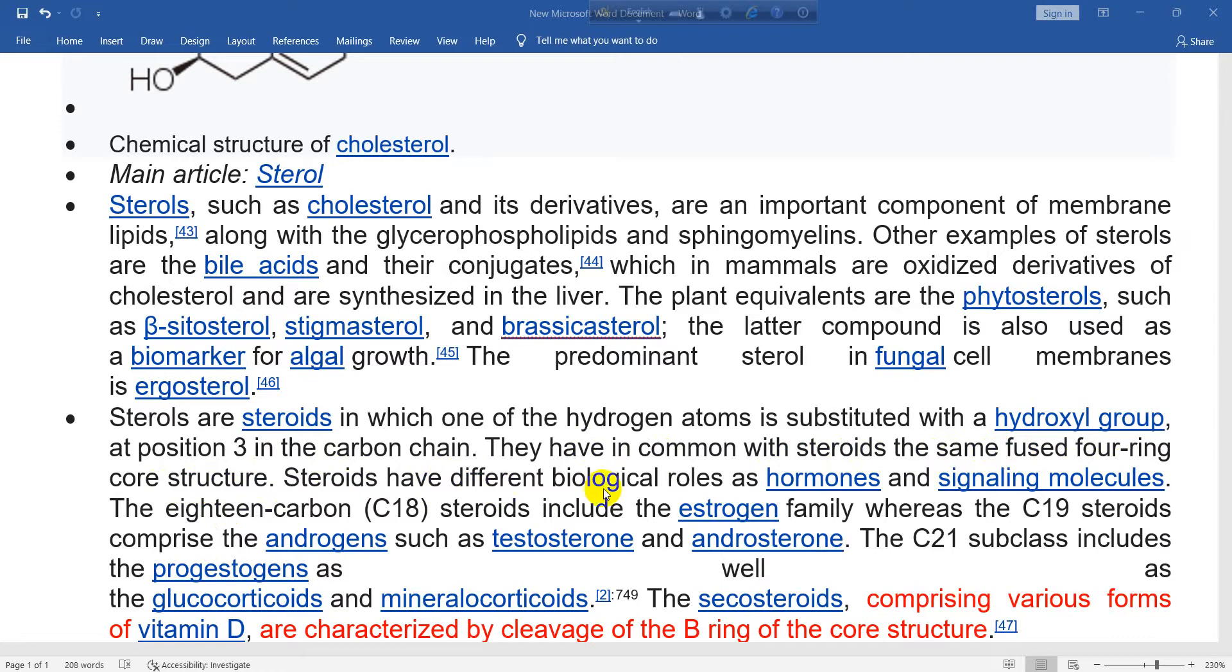Steroids have different biological roles as hormones and signaling molecules. The 18-carbon C18 steroids include the estrogen family, whereas the C19 steroids comprise the androgens, such as testosterone and androsterone.